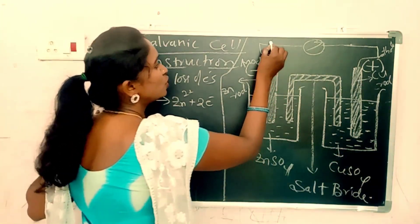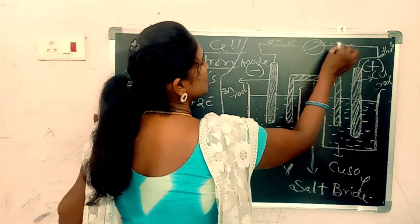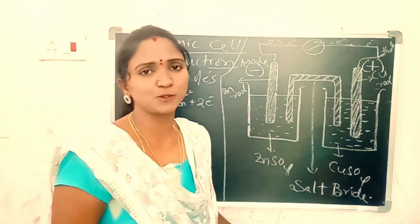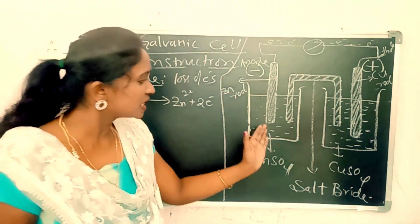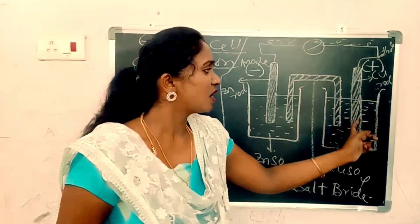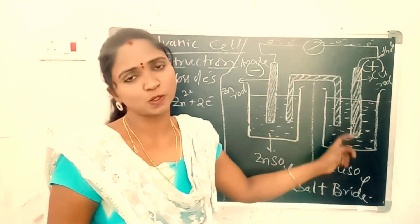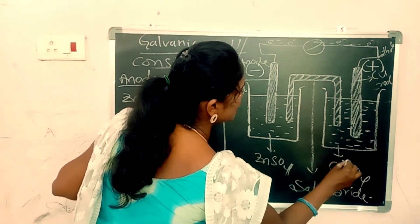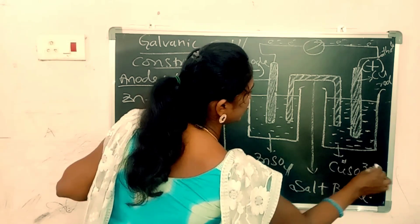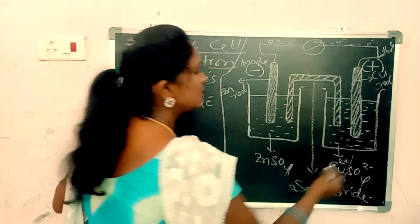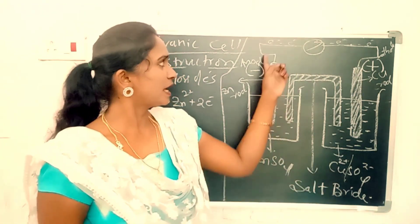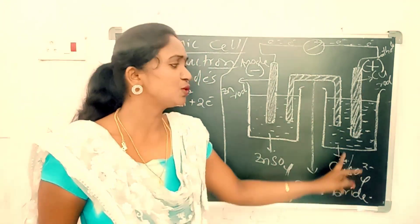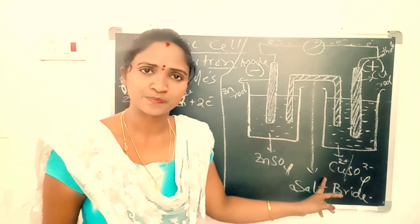The electrons move towards the circuit and enter into the copper sulfate solution. CuSO₄ dissociates into Cu²⁺ and SO₄²⁻ ions. The electrons from the anode are accepted by the Cu²⁺ ions present in the CuSO₄ solution.